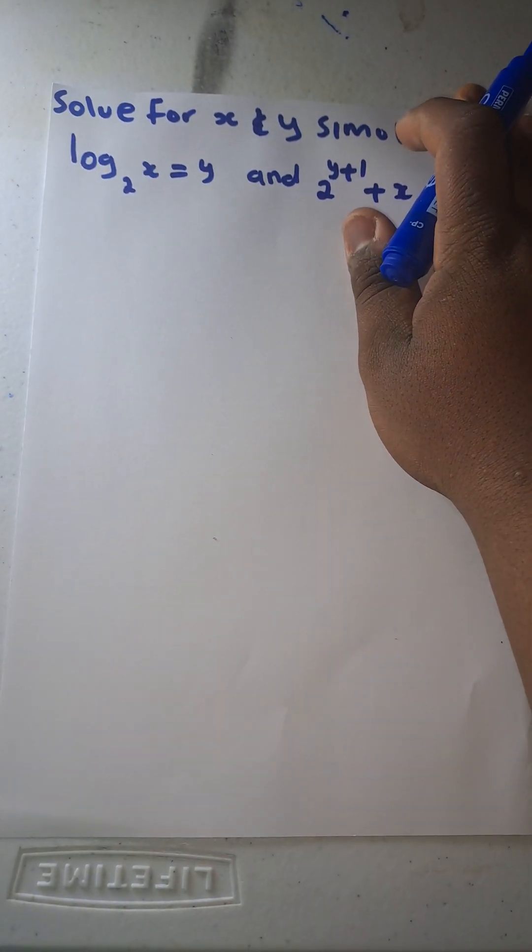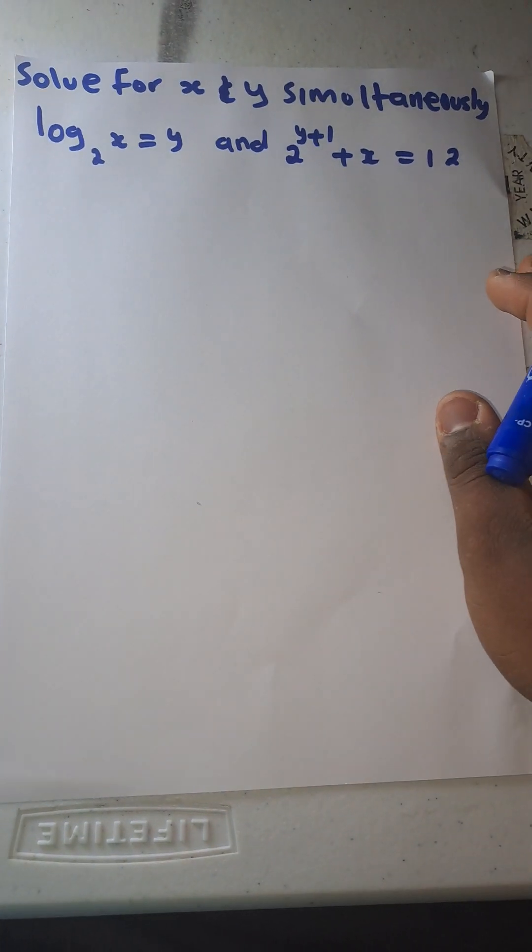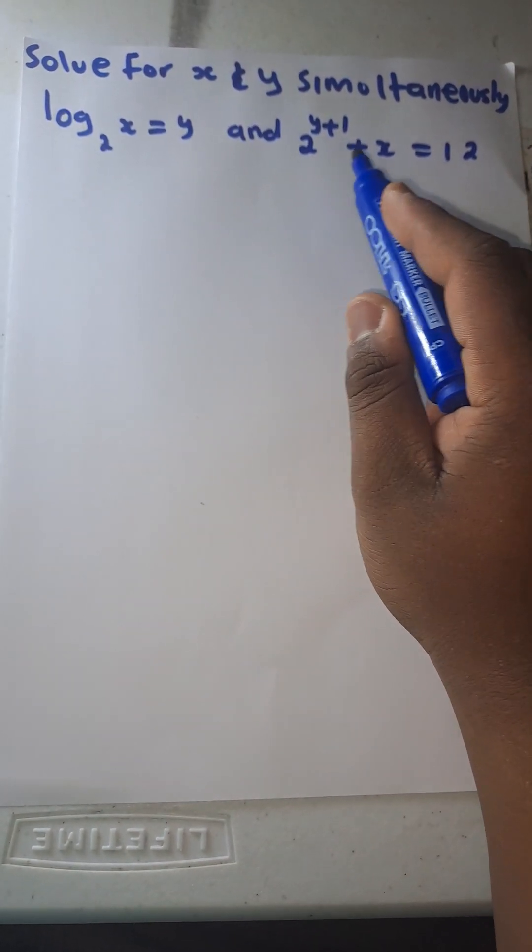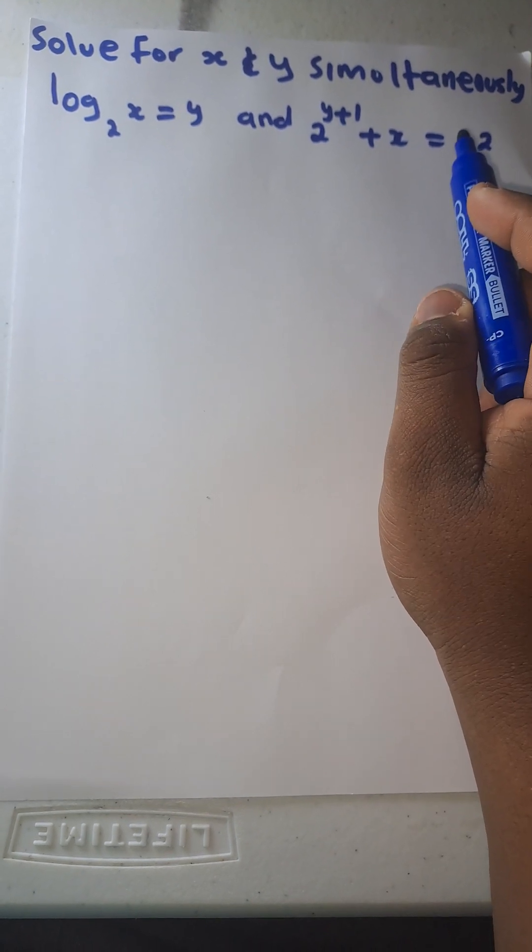You have log base 2 of x equals to y and 2 to the power y plus x equals 12. So now as you can see you cannot solve this thing because you can't change 12. Then you have one unknown, it's a problem.